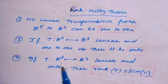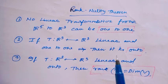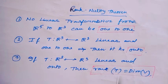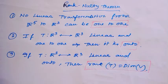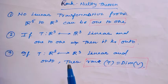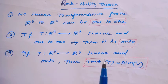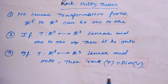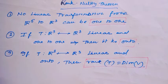If T is linear and one-to-one, then obviously this transformation is also onto. Another type of question: if T is a linear transformation from R3 to R3 which is onto, then rank of T equals the dimension of V.